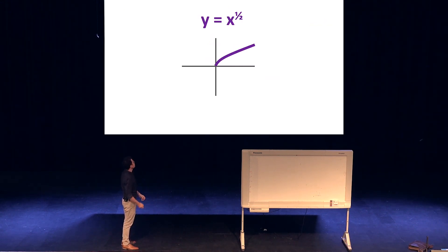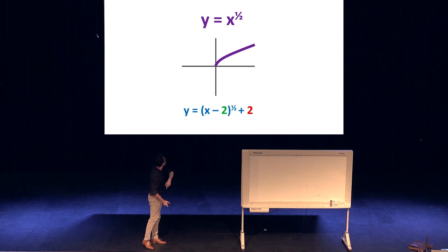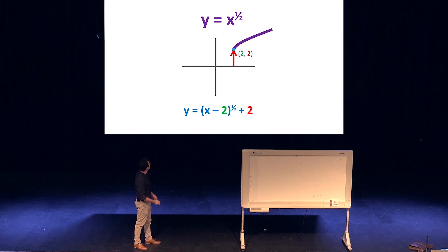So here's y = x^(1/2). If you've got y = (x - 2)^(1/2) + 2, well, you move it over by 2, and then move it up by 2 as well. And that right there becomes the turning point.